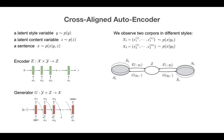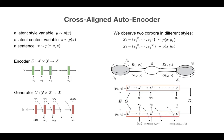The transferred sentences from one style should match example sentences from the other style as a population. To tackle challenges associated with adversarial training over discrete samples generated by recurrent networks, we introduce a refined alignment of sentence representations across text corpora. We call our model the cross-aligned autoencoder.